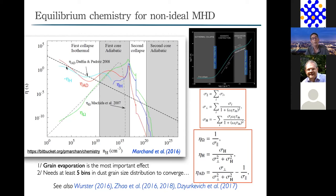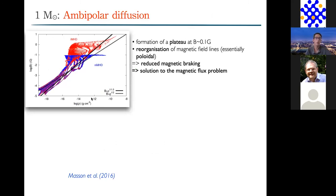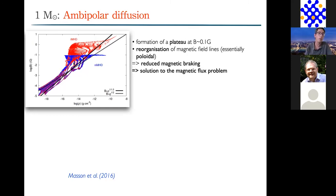Presenting a model similar to before but with non-ideal MHD, focusing specifically on ambipolar diffusion at the first core formation stage. With ambipolar diffusion, the evolution of the magnetic field is very different from ideal MHD. At a given snapshot, comparing the magnetic field amplitude as a function of density between ideal MHD and ambipolar diffusion: in ideal MHD the magnetic field is perfectly coupled with the fluid—it is compressed with the density and increases with density. With ambipolar diffusion, the coupling is imperfect, allowing the field to decouple from the gas.